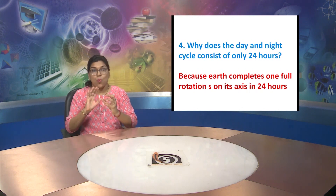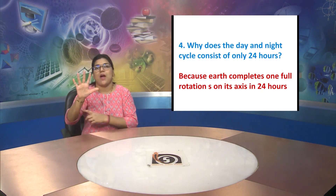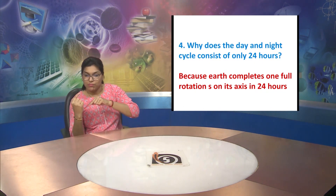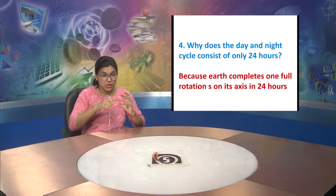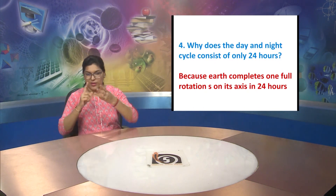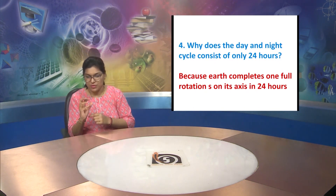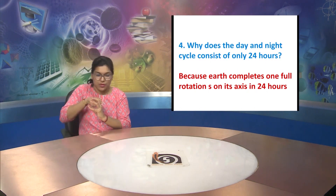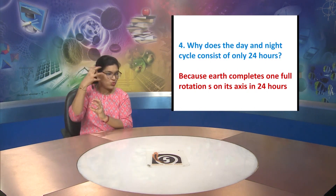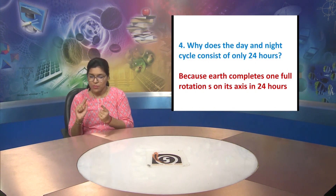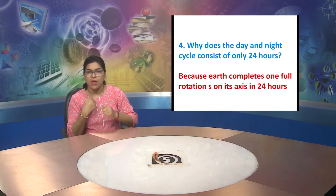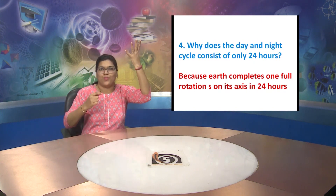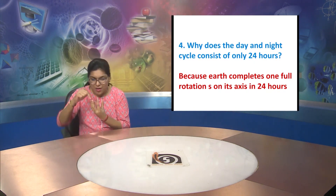Question four: why does the day and night cycle consist of only twenty-four hours? Answer: because Earth completes one full rotation on its axis in twenty-four hours. That is the reason a day and night in total have twenty-four hours only.